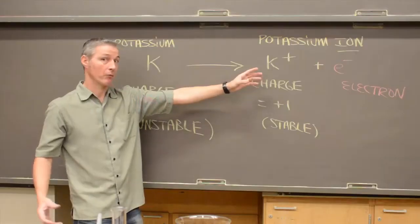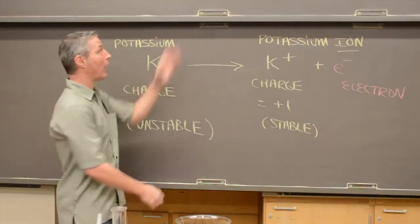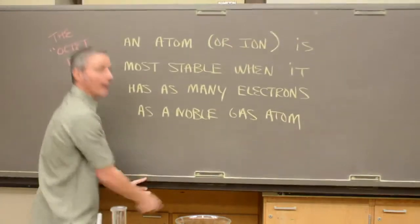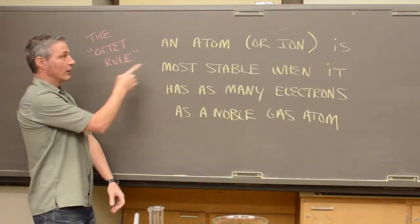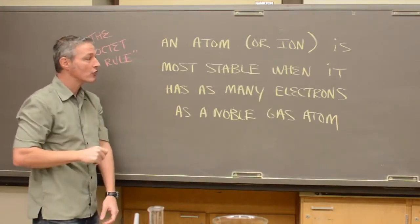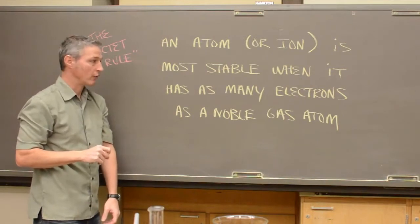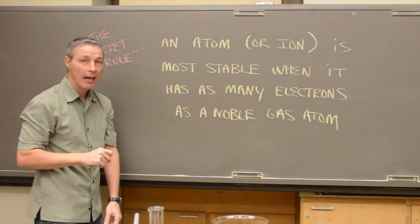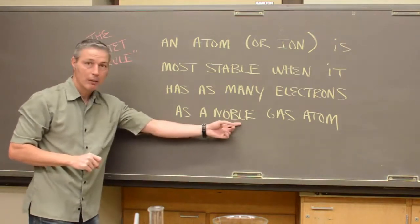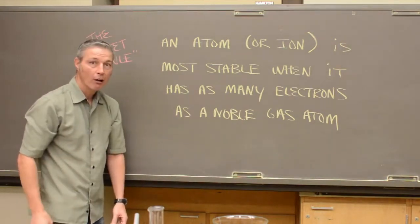Why? It has to do with a little pattern called the octet rule, which is that an atom or ion is most stable when it has as many electrons as a noble gas atom. So let's go talk about what these guys are right now.